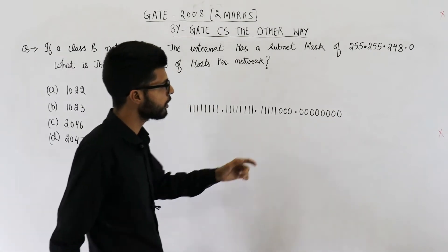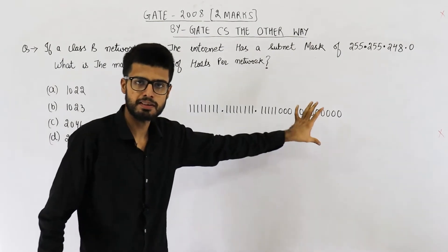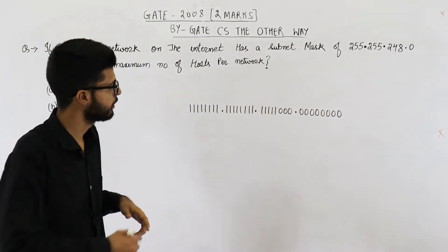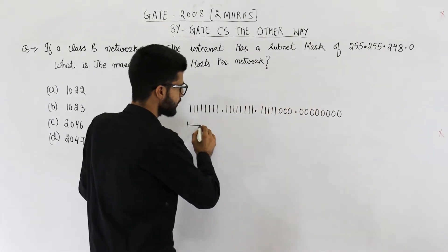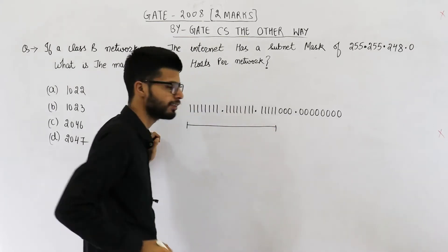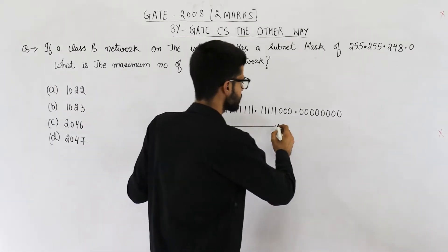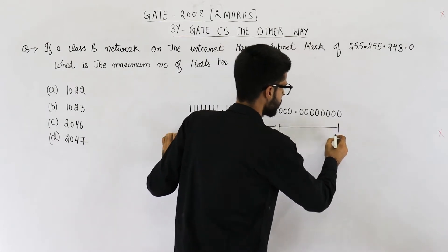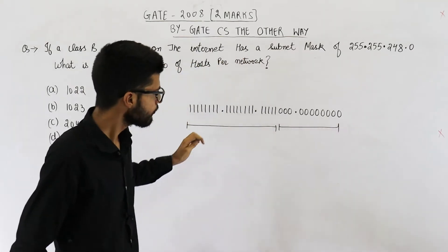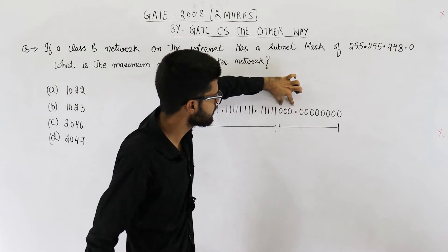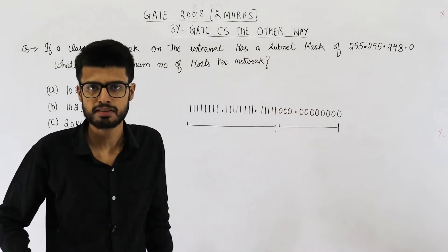So if you convert this subnet mask into binary, this is the bit pattern that you are going to get. Now all the ones represent network ID or subnet ID, whatever you may call it. And all the zeros represent host ID. So you can see,